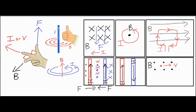With my pointer finger up and my middle finger into the screen, my thumb faces to the left. So when two current-carrying wires are next to each other with current in the same direction, they attract — their forces push inward toward each other. The blue wire produces a magnetic field affecting the red wire, and vice versa, and both wires get pushed inward.